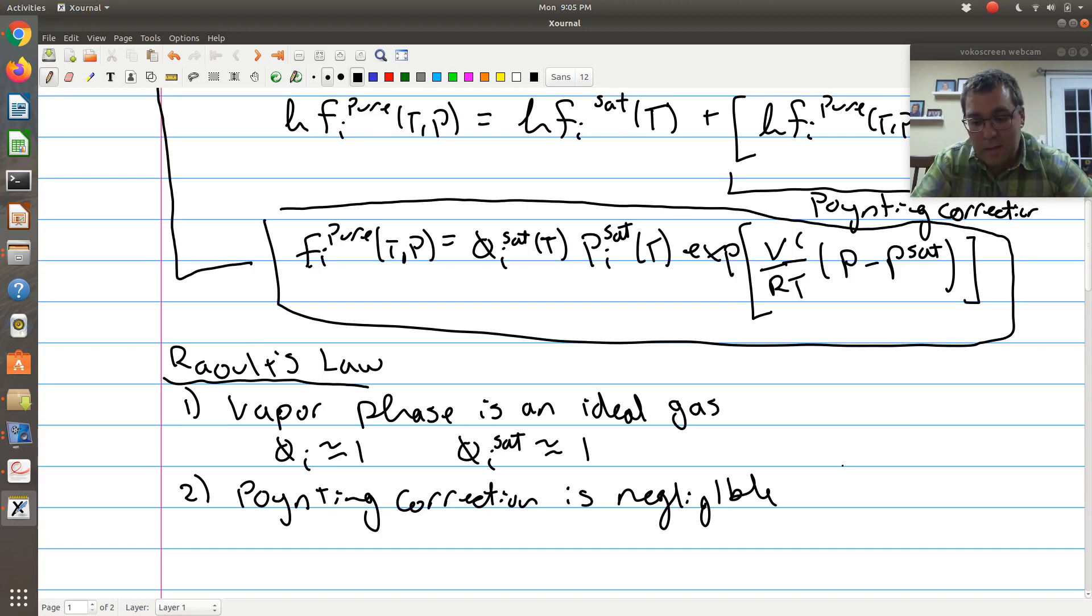If I am trying to model solubility of supercritical CO2, dealing with pressures of hundreds of bars, thousands of bars, if I'm dealing with huge pressures much greater than atmospheric pressure, then I might need to consider using Poynting correction. So if I'm at 100 bars, 1,000 bars, then I probably need to use Poynting correction. If I'm at one bar, then my Poynting correction is probably pretty insignificant.